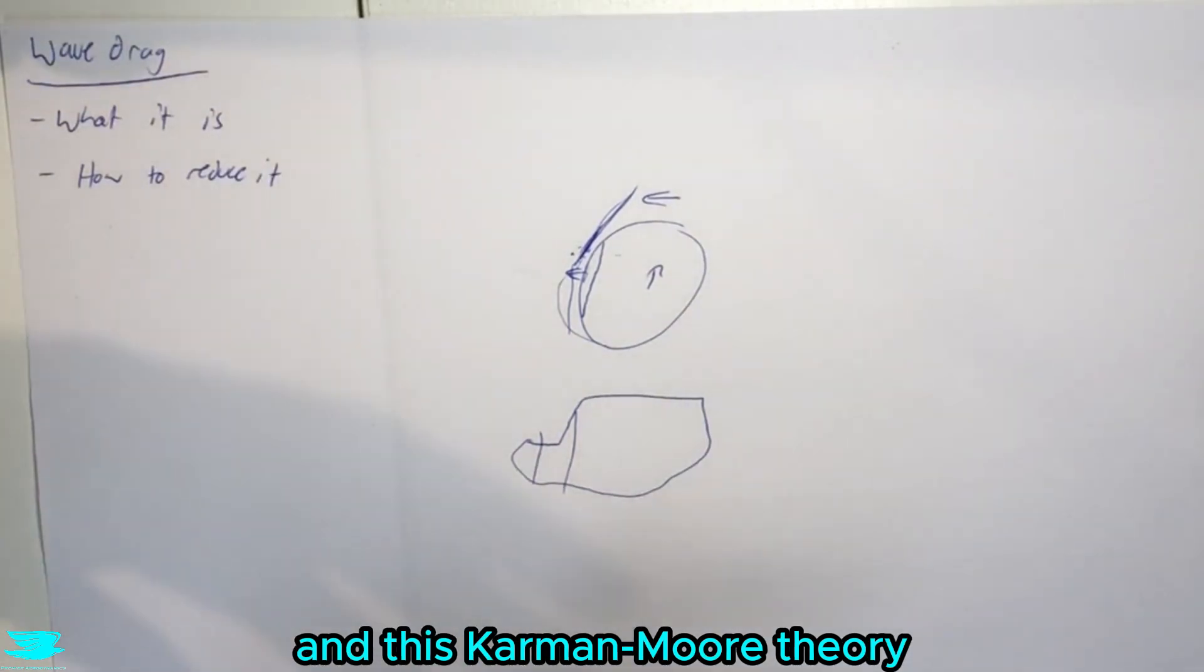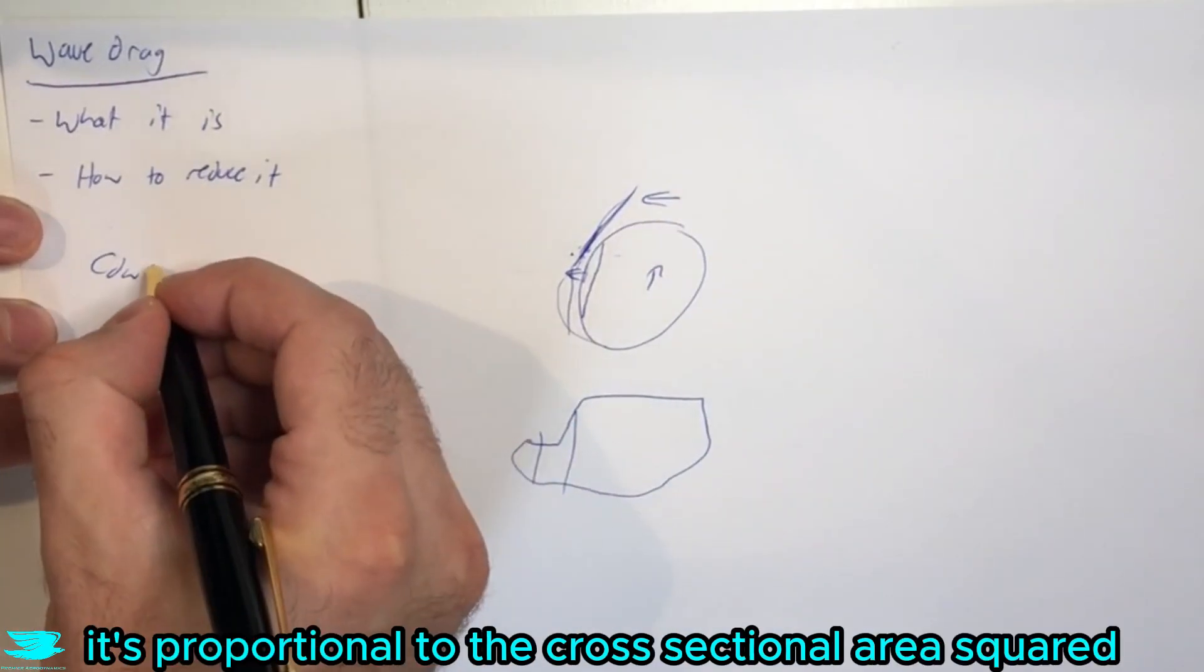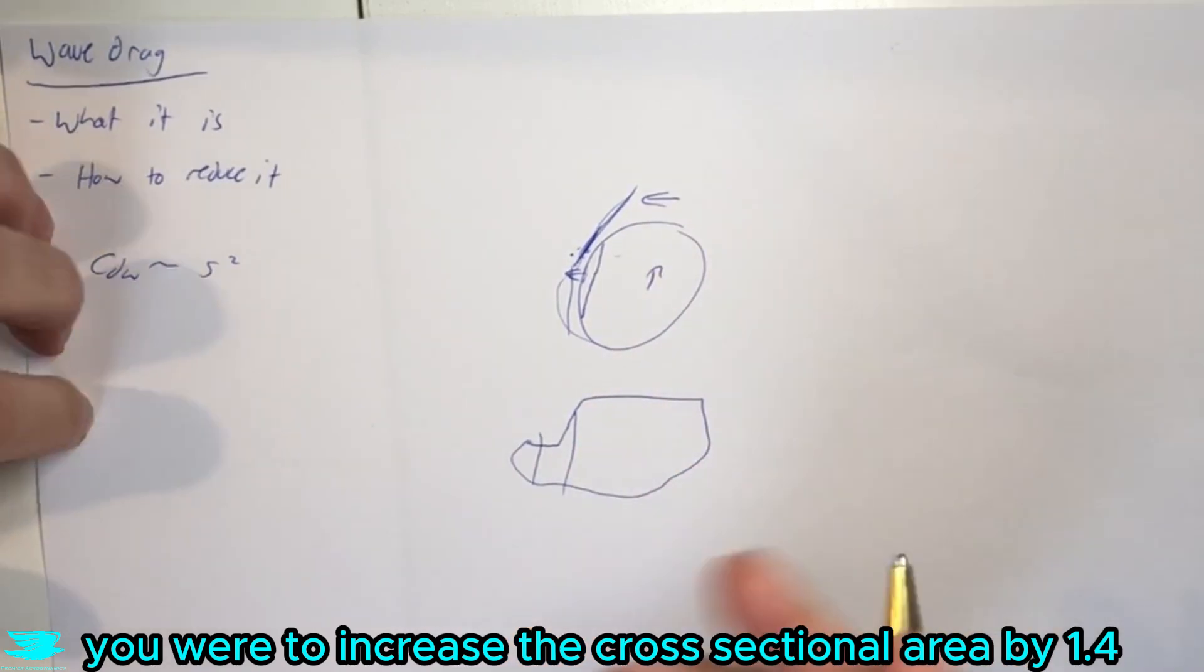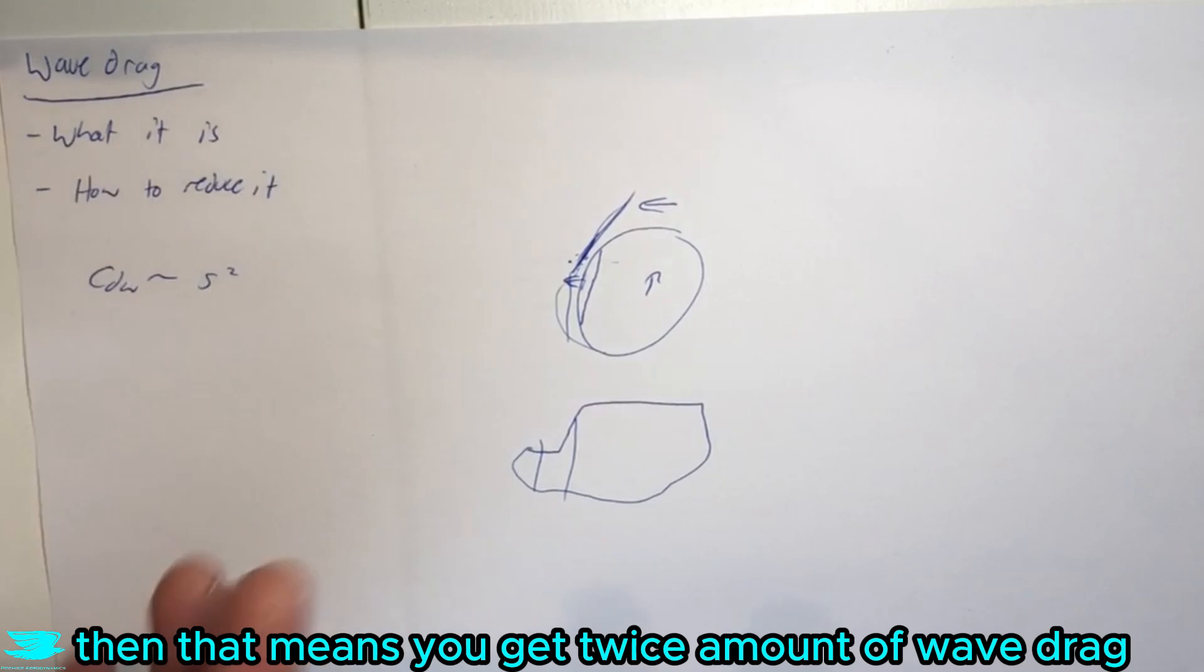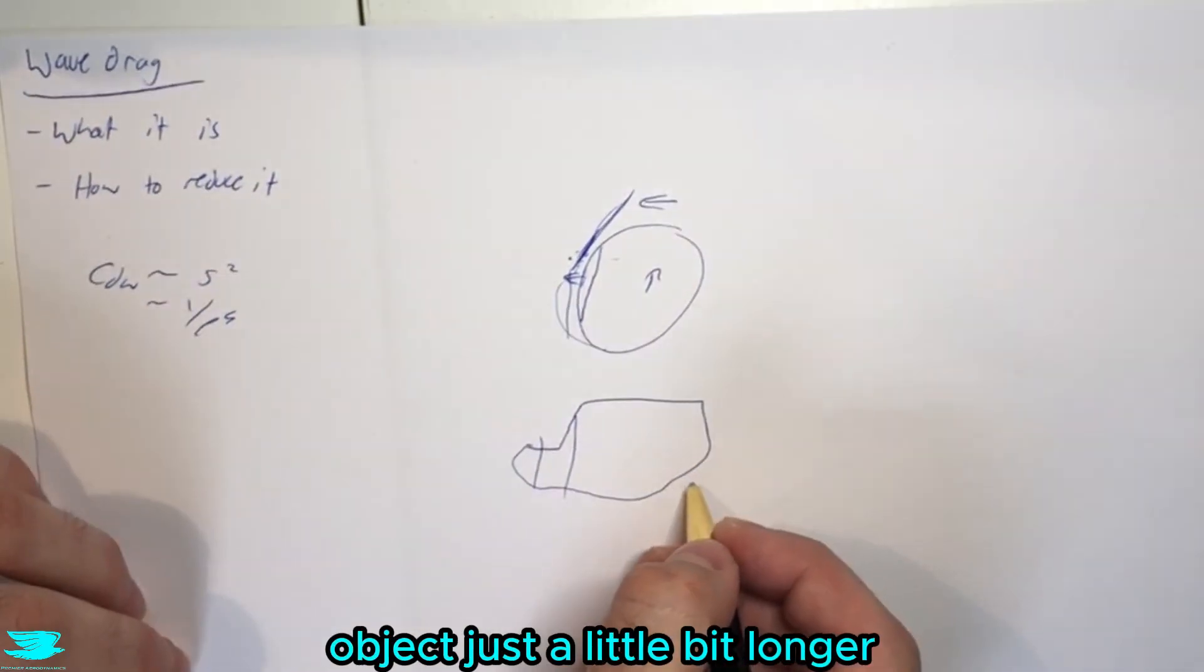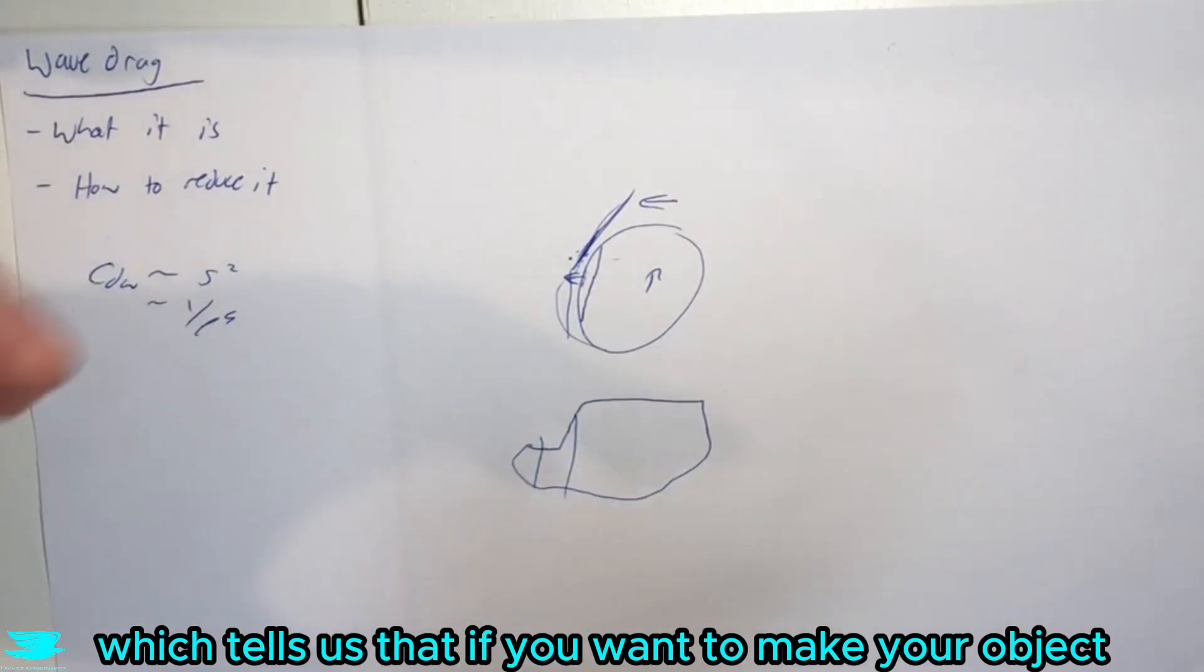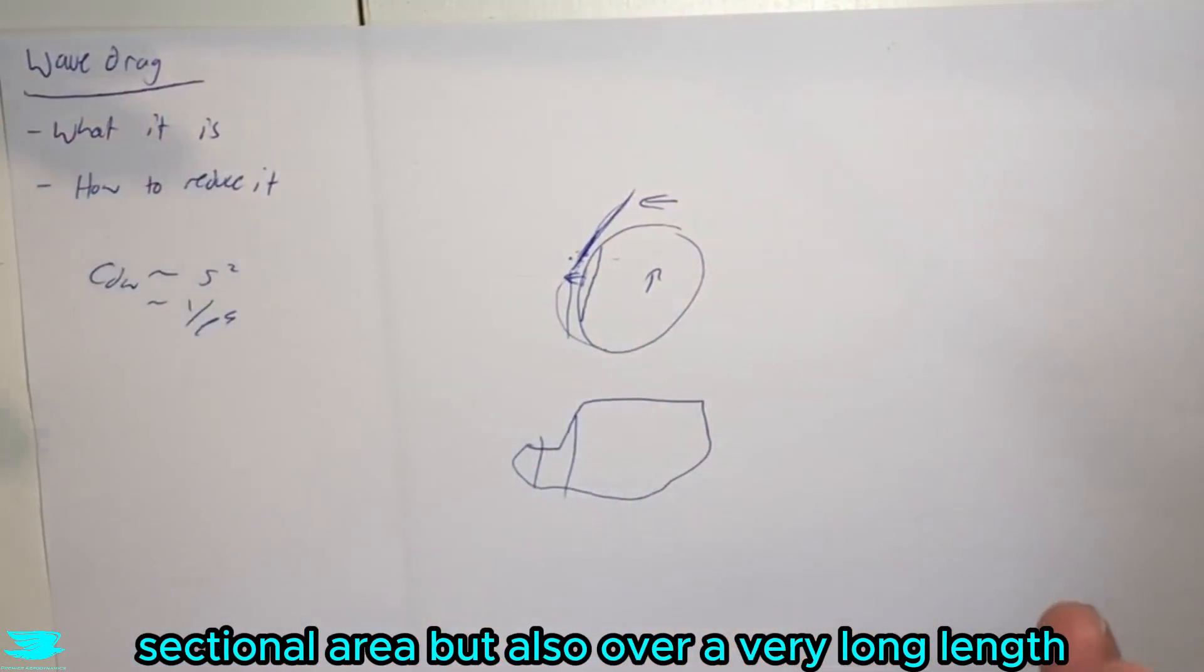And this Common-Mohr theory also demonstrated that the wave drag coefficient, this is really cool, so it's proportional to the cross-sectional area squared, which means that if you were to increase the cross-sectional area by 1.4, then that means you get twice the amount of wave drag. But it's also proportional to one on the length of your object to the power of four, which means that if you were to make your object just a little bit longer, the wave drag would drop a lot, which tells us that if you want to make your object low wave drag, you want it to have quite a gradual change in cross-sectional area, but also over a very long length.